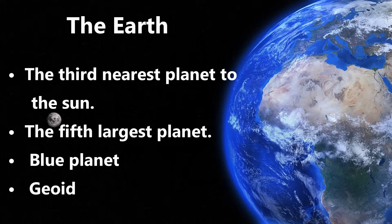Earth is the third planet from the Sun and the fifth largest in size. Earth is slightly flattened at the poles, so this shape is called a geoid. From outer space, Earth is seen as blue, so it is called the blue planet.